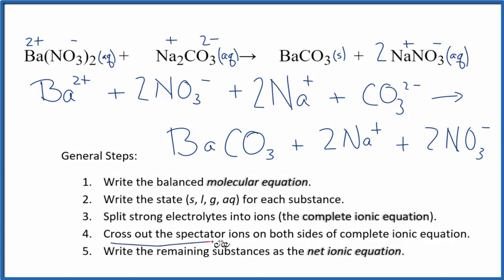Now we can cross out those spectator ions. They appear on both sides of the ionic equation here. So let's do that. We can see that we have 2 nitrates here in the reactants and 2 in the products. It really hasn't changed. We're not interested in those spectator ions. We cross those out. 2 sodium ions in the reactants, 2 in the products. Cross them out.